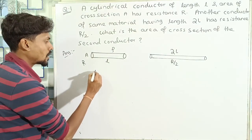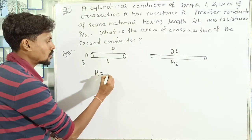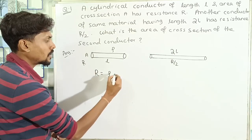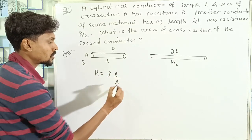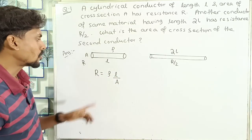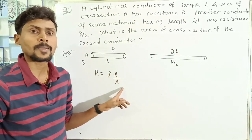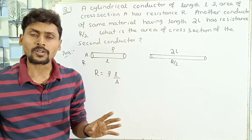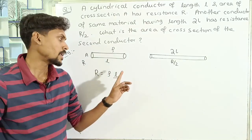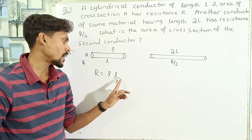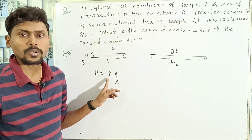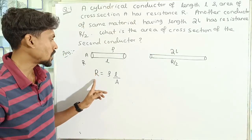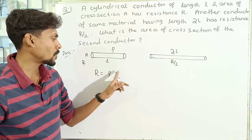Since both conductors are made from the same material, they have the same resistivity. We use the resistance formula: R equals resistivity into length divided by area of cross section, that is R = ρL/A. For the first conductor: R = ρL/A.